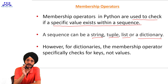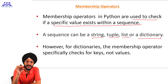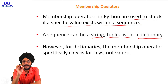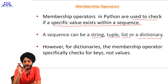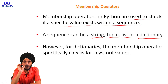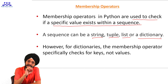We will also learn what is the meaning of string, tuple, list, or dictionary. Membership operators check if a specific value exists within a sequence. But in the case of a dictionary, the membership operator does not check for values — it checks for keys.